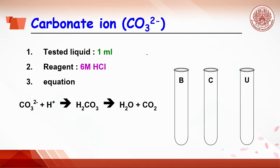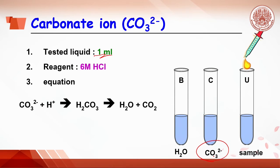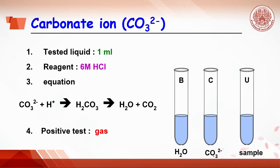For example, carbonate ion testing: 1 mL of testing liquid like water is dropped into the B tube, 1 mL of sodium carbonate which is carbonate ion is dropped into the C tube, and 1 mL of unknown sample is added into U tube. The reagent for carbonate ion testing is hydrochloric acid. Each tube receives hydrochloric acid. Observe the reaction. Carbonate ion reacts with proton or acid to get carbonic acid which is not stable, so it decomposes to get carbon dioxide gas. The positive test for carbonate ion is CO2 gas.